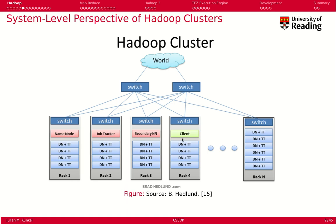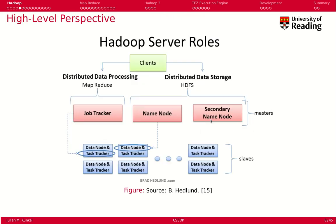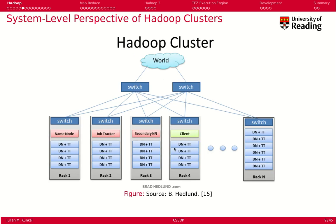Clients can be run on any rack — either on a rack that already has data nodes and task trackers, or on a dedicated rack with no data nodes at all. This is how you would lay out server roles onto existing hardware.